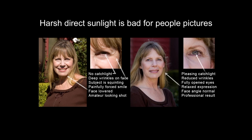We're just not going to do any of those in this class. On the right, I moved my wife into the shade — she's able to open up her eyes. We see a pleasing catch light, which is actually just a reflection of me in her eyes. I've got some light-colored pants on and you can see that reflected in her eyes — it's a very glossy, wet surface effect, and that is very good for portraiture. Of course, it reduces wrinkles, she's able to open her eyes all the way, relax her expression, and her face angle is normal. It's just a professional result.